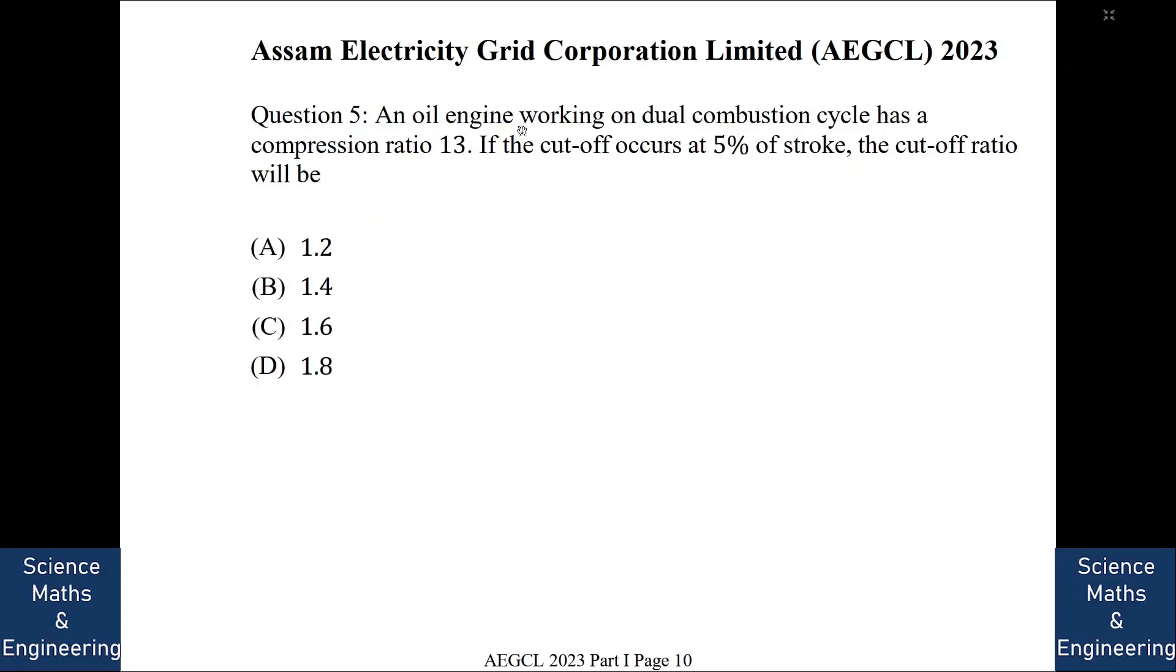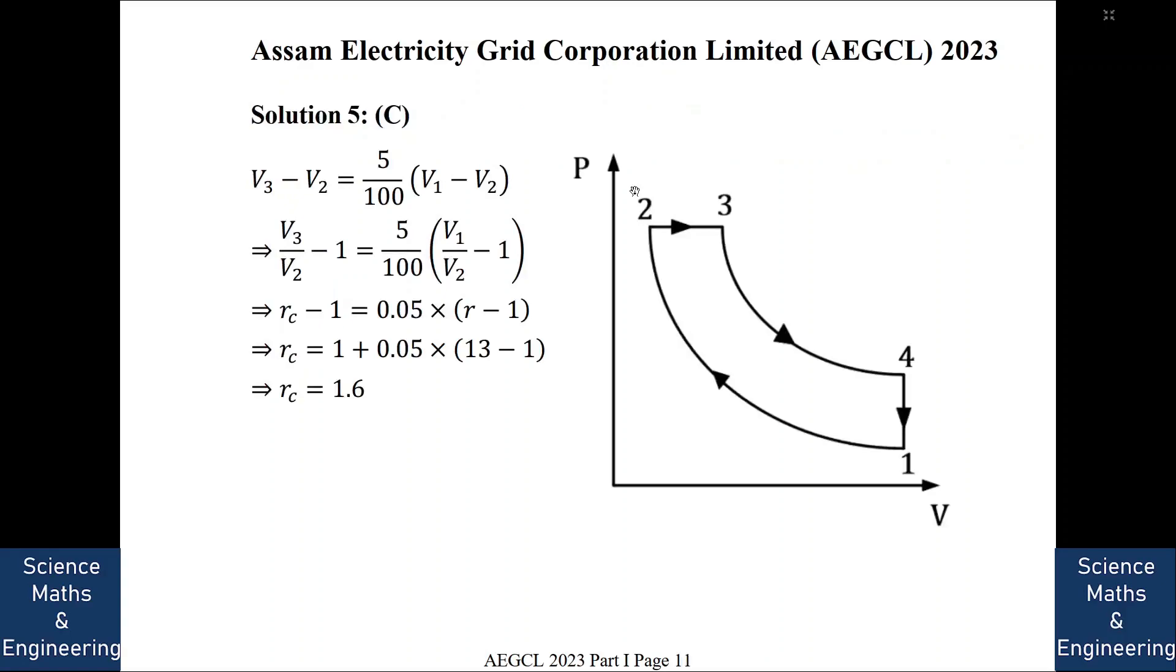An oil engine working on a dual combustion cycle with a compression ratio 13. If the cutoff occurs at 5% of the stroke, the cutoff ratio will be, so the answer is, see, this is the diagram for a dual cycle. Now 1 to 2 is the stroke length, which means that is V1 minus V2 is the stroke volume.